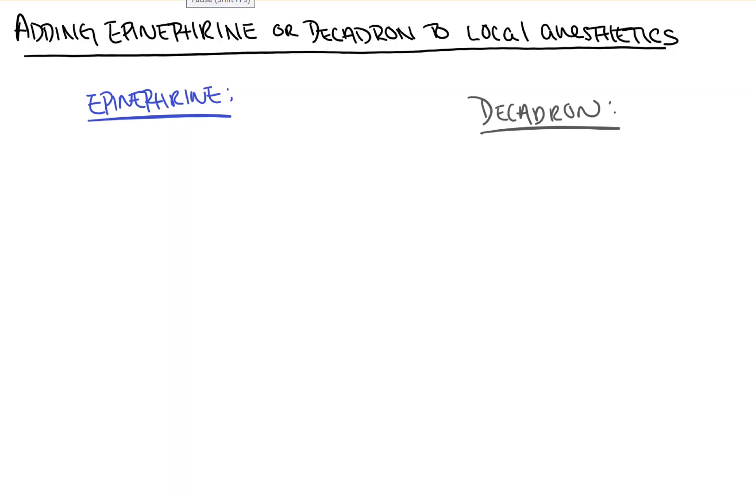Hi everyone, this video from Count Backwards from 10 will take a quick look at what happens when you add epinephrine or decadron to local anesthetics. You may have seen my other video on adding bicarbonate to local anesthetics. It's a bit longer and more involved because there's a lot of biochemistry. This one is going to be pretty quick.